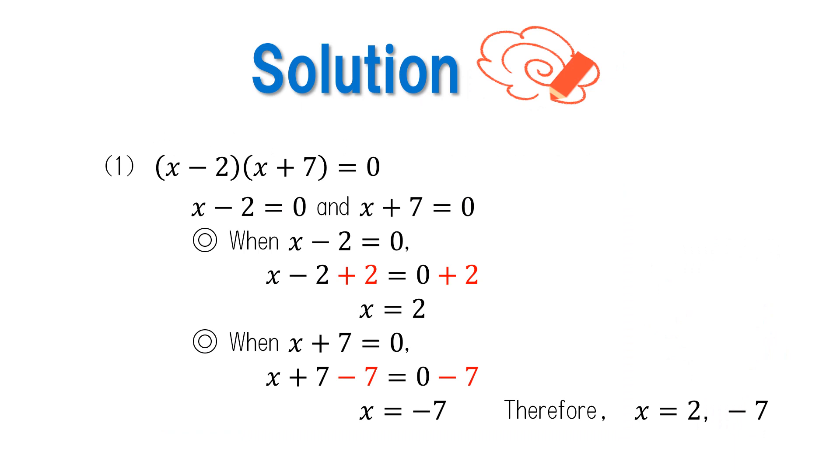Now let's check our answers. For number 1, this problem is already factored and is equal to 0. We can rewrite the equation as x plus 7 equals 0 and x minus 2 equals 0, giving us the solutions x equals 2 and x equals negative 7.